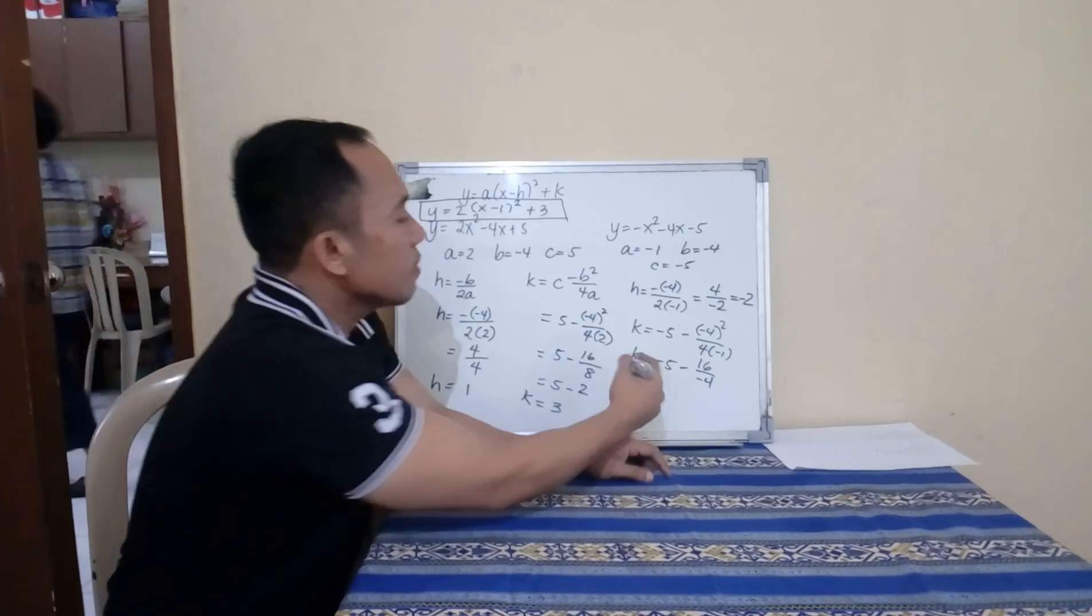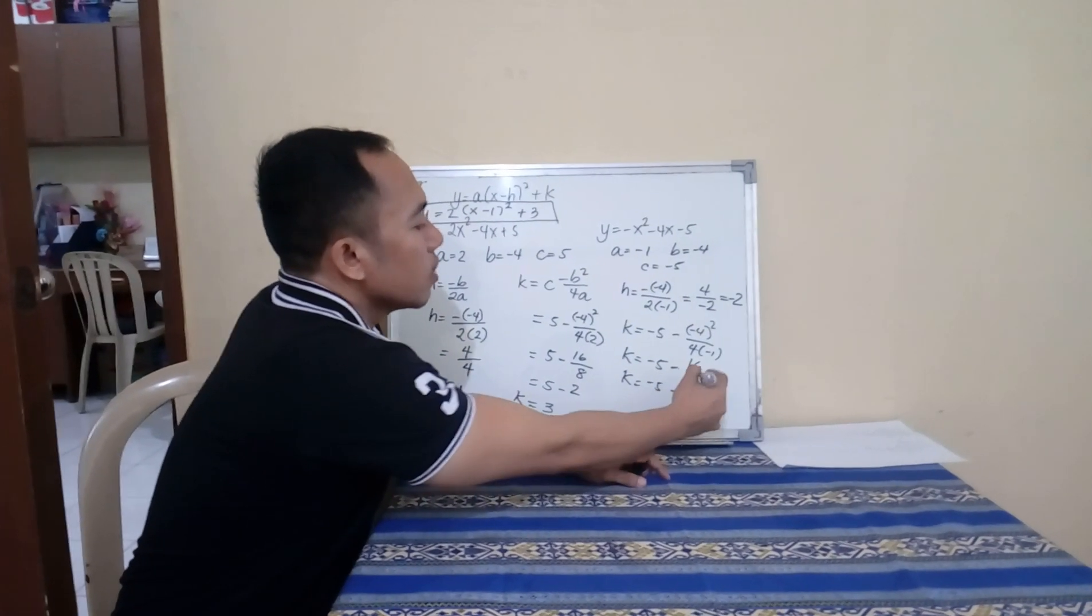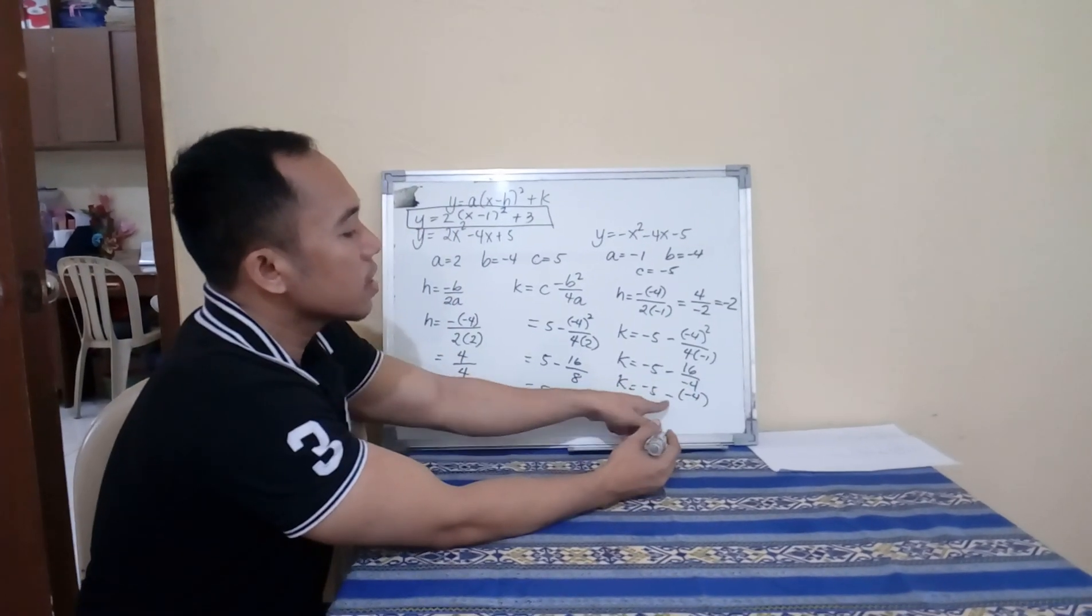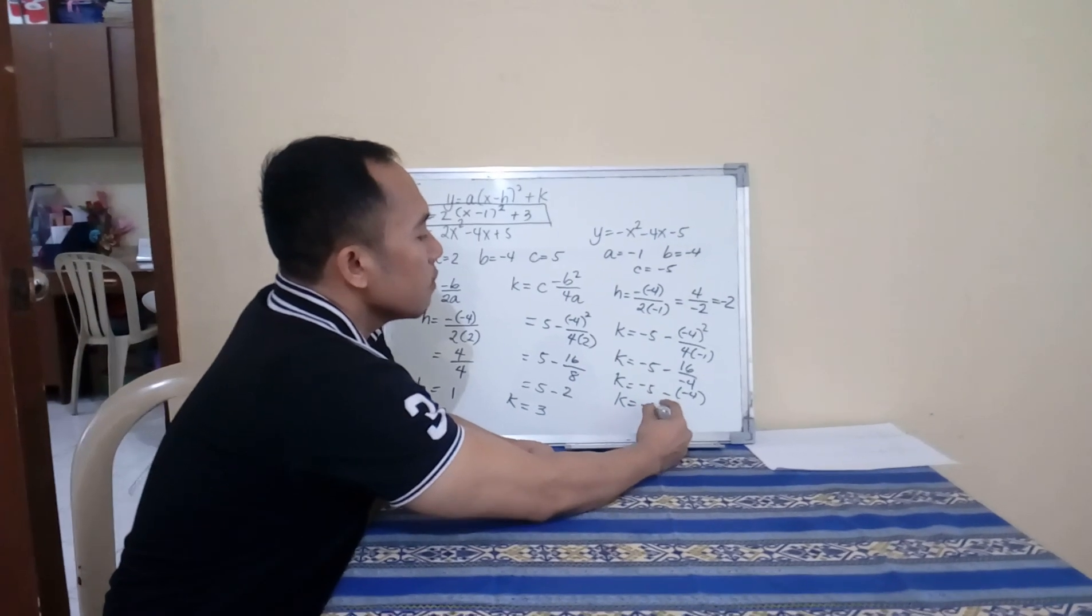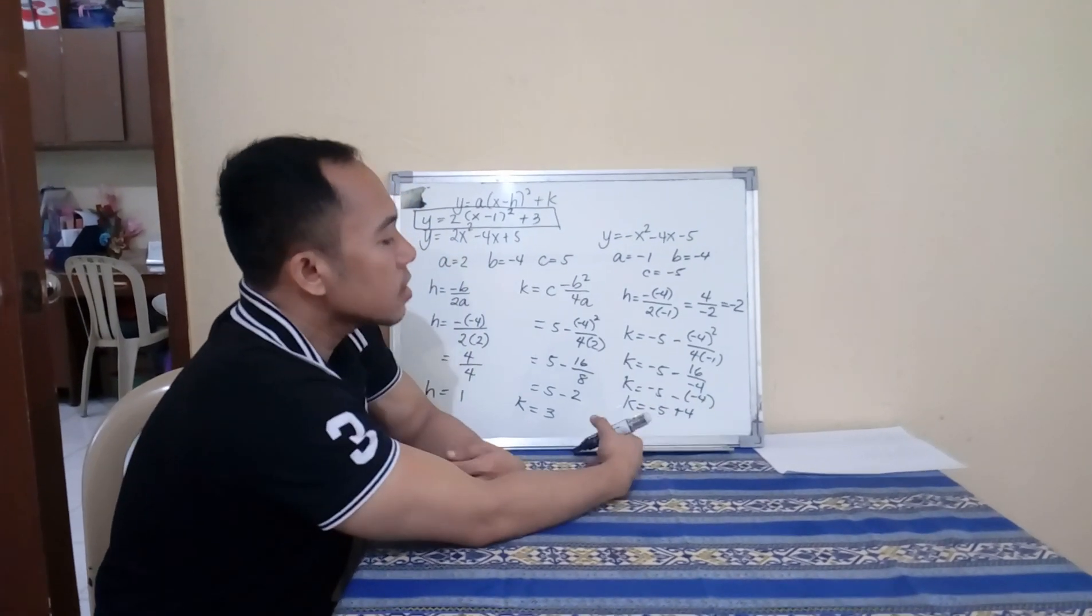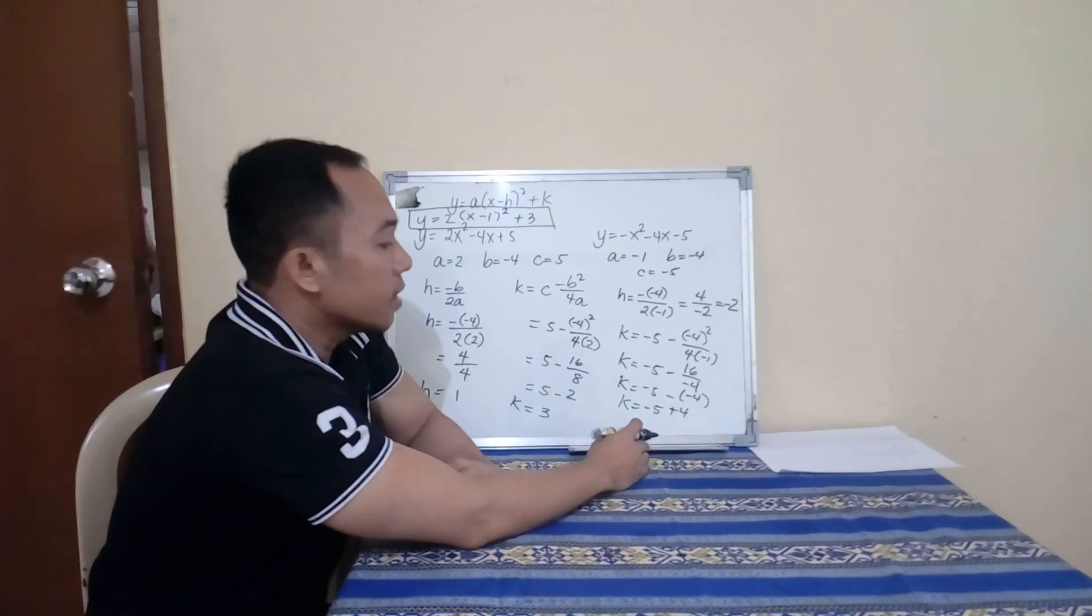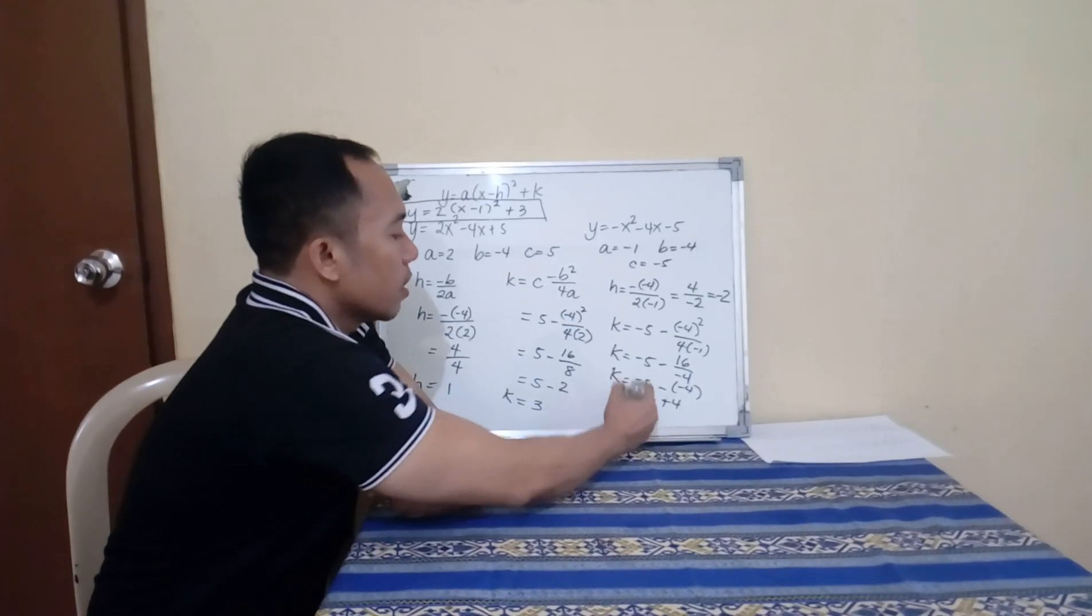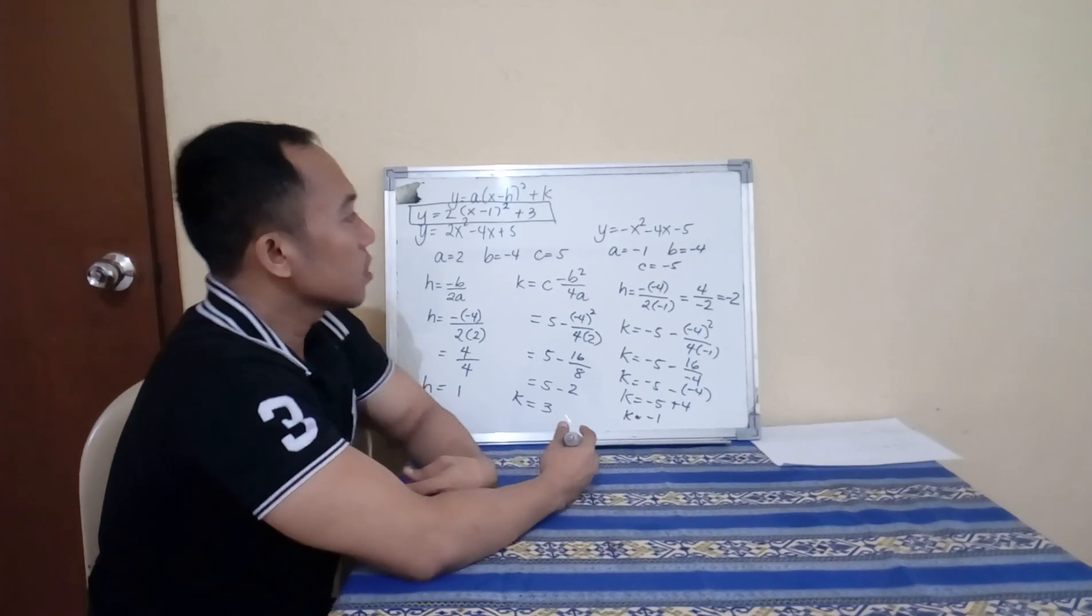16 divided by 4 is negative 5 minus negative 4. Negative 4 times negative becomes positive, so K equals negative 5 plus 4. Since different signs, you will subtract then get the sign of the highest absolute value, which is negative. K equals negative 1.